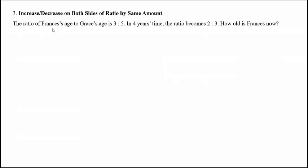So in this question, the ratio of Francis's age to Grace's age is 3 to 5. In 4 years time, the ratio becomes 2 to 3. And we need to find how old is Francis now.